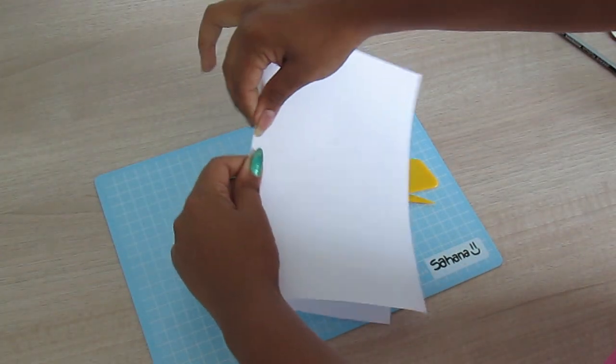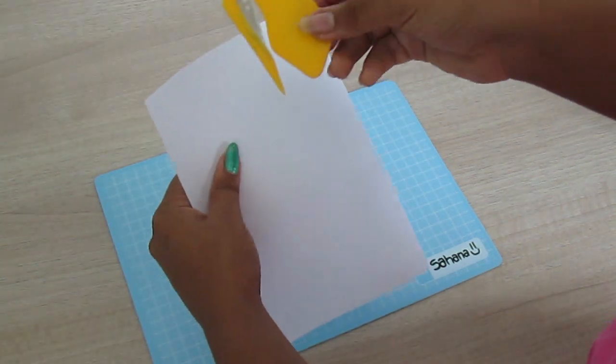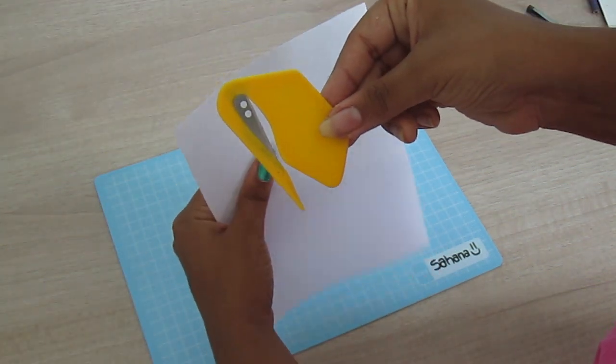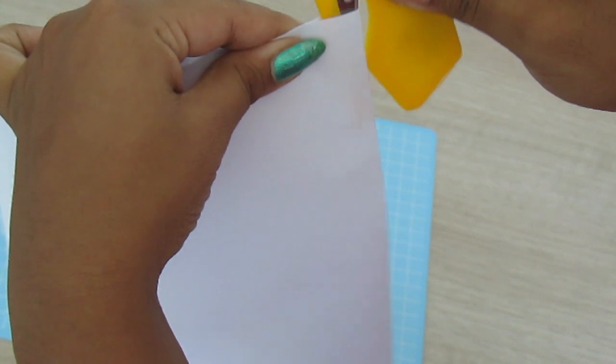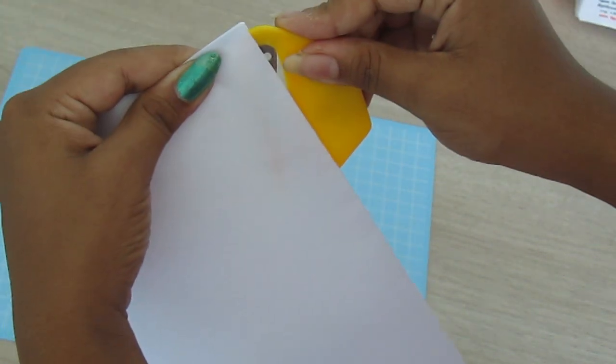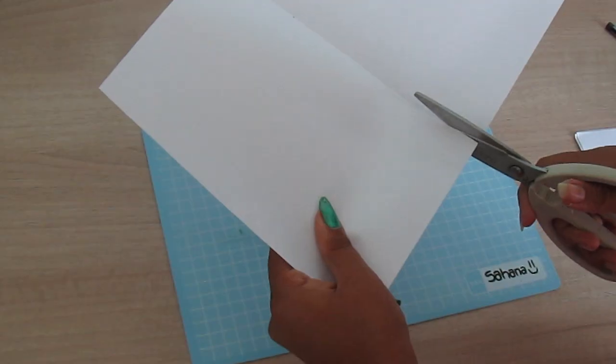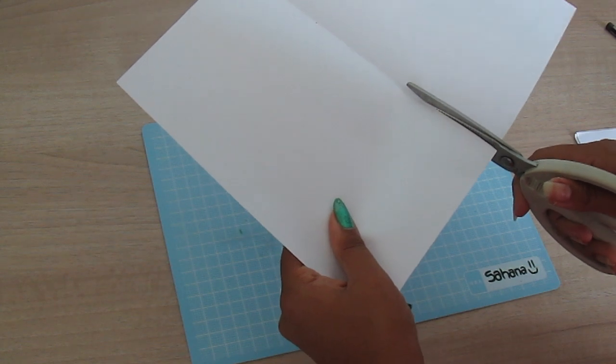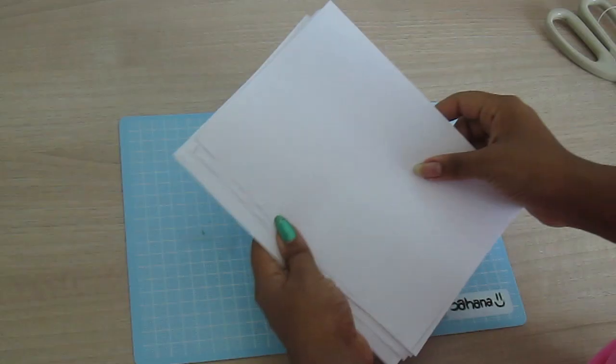Then we're going to take each of these sheets and cut them through the center on the creases we made. I have this cutting device which lets me just slide through the paper to get a clean cut. You can also just use a pair of scissors.